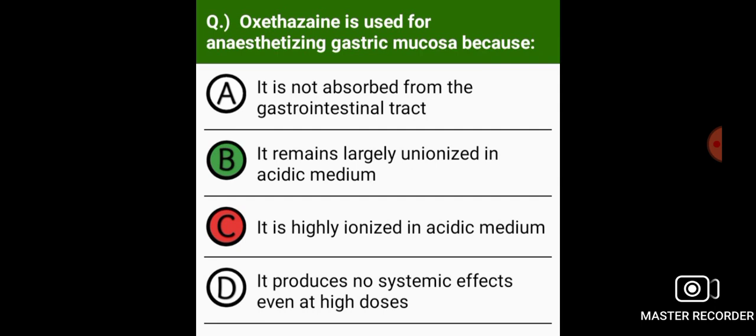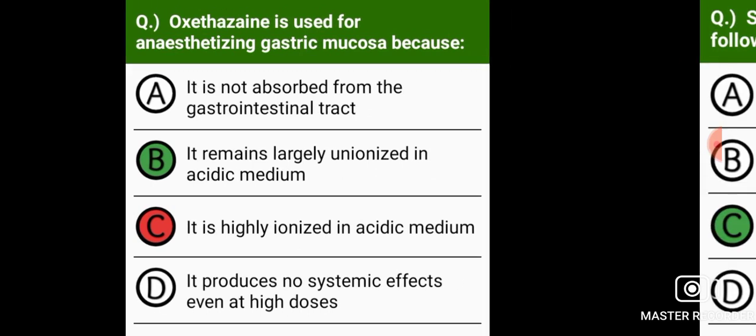Oxethazaine is used for anesthetizing gastric mucosa because it remains slightly unionized in acidic medium.